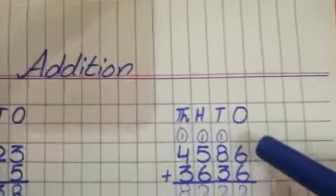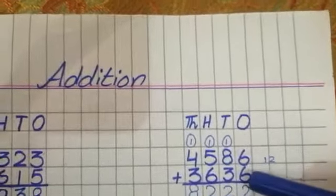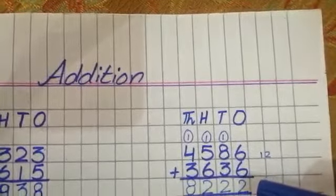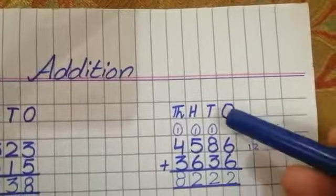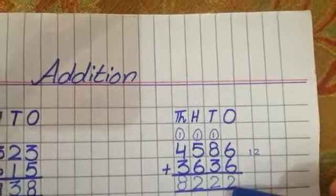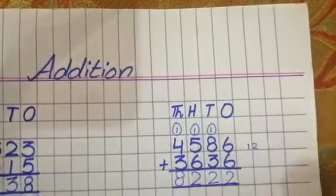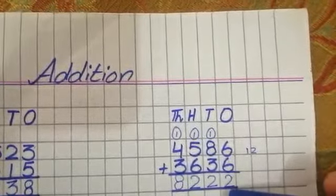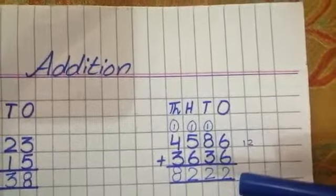Now question number 2. Again start from 1's: 6 plus 6 is equal to 12. In 12, you can write 2 under 1's house and 1 should be carried over 10's house. Right digit you can write down, and the left digit you can carry over 10's house.